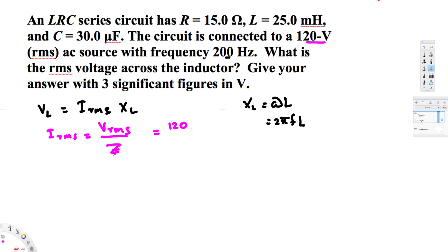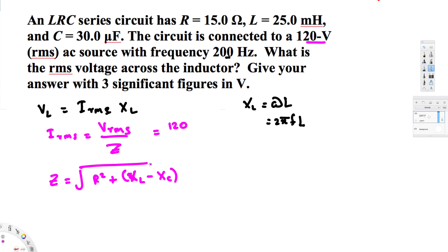To find the impedance, we use the impedance equation, which is the square root of R squared plus the quantity XL minus XC, all squared — where XL is the inductive reactance and XC is the capacitive reactance. Now let's plug in all the values to calculate impedance.